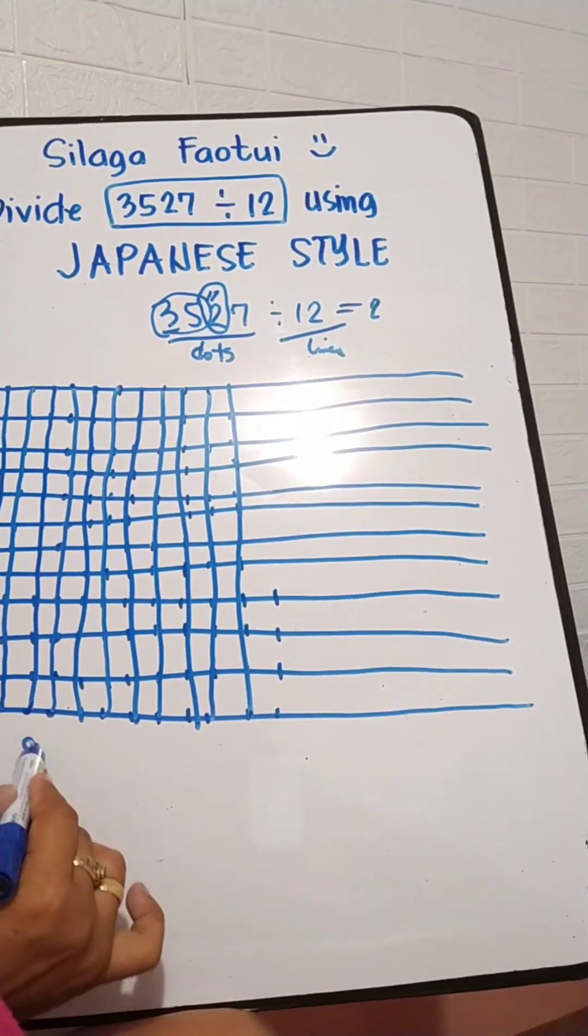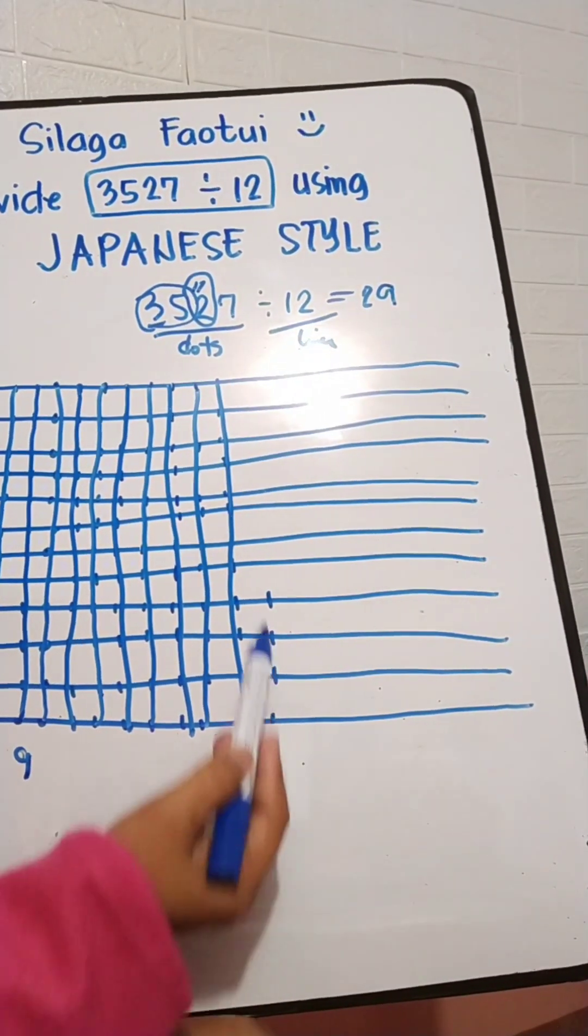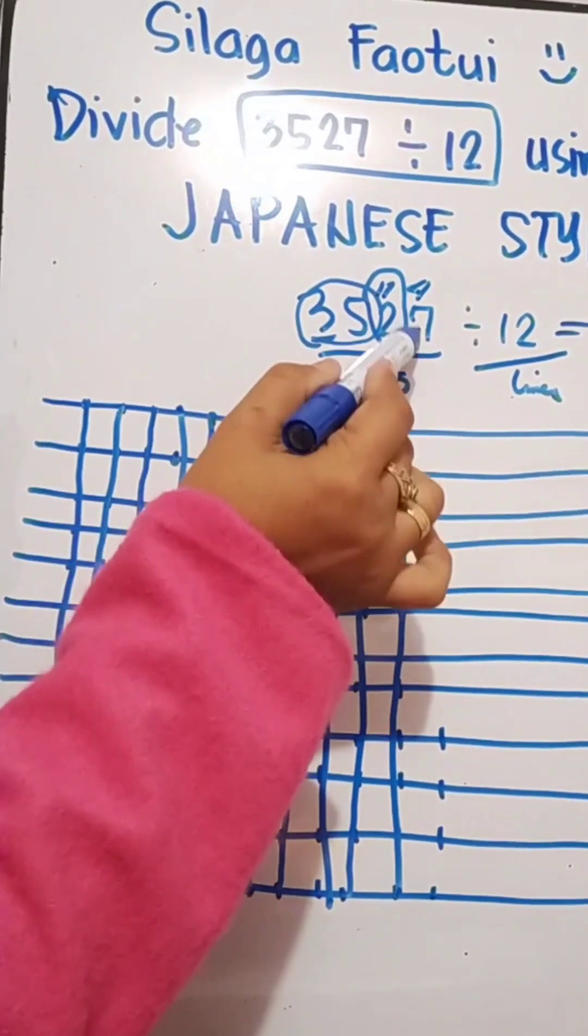So we will just continue this. 9 lines formed. And then we still have remaining 4, so we will add this one to the next digit. So it will be 47 now.